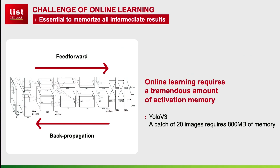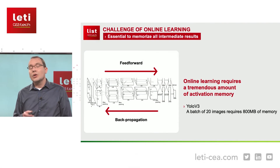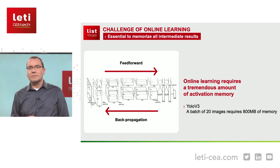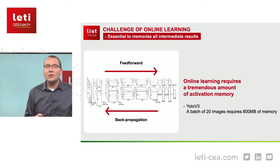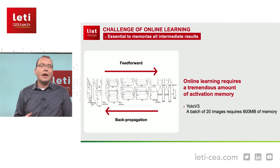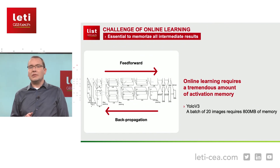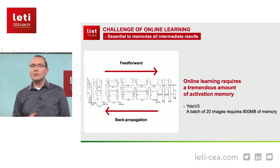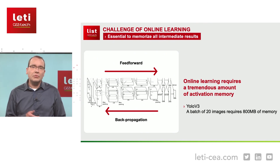Considering those accelerators for learning at the edge, they share all the challenges I've mentioned before, but they are faced with one additional challenge linked to the learning phase itself. Indeed, in order to be able to run the back-propagation algorithm, you need to store all the intermediate activation results. This is because you need them for calculating the gradient, for correcting the weights at each and every layer. And you might not need that for a single input, if you do not want to cycle your weights too much, but for a batch of inputs.